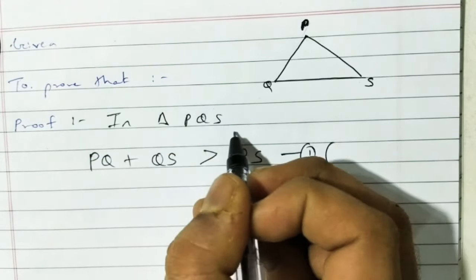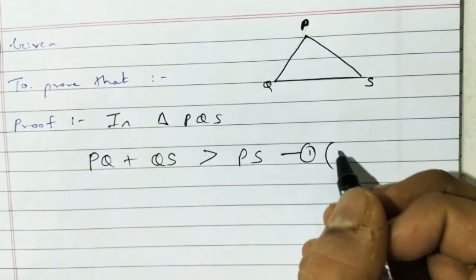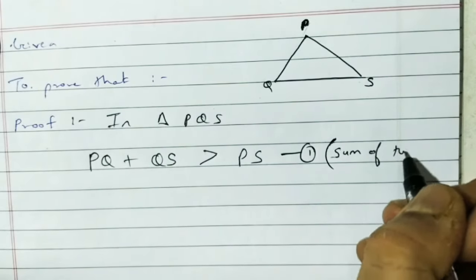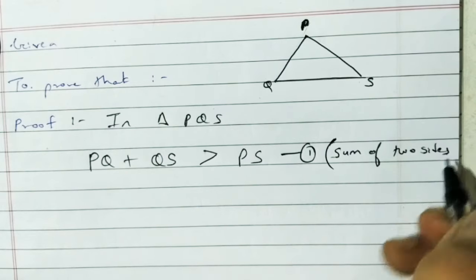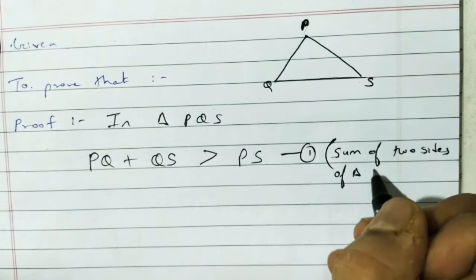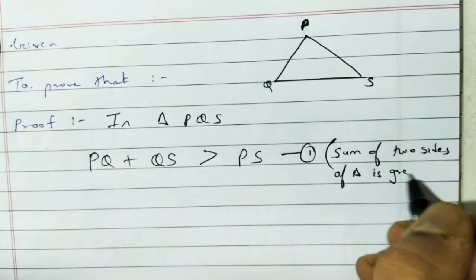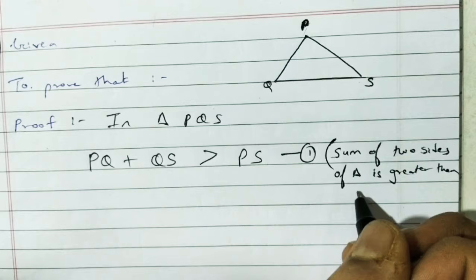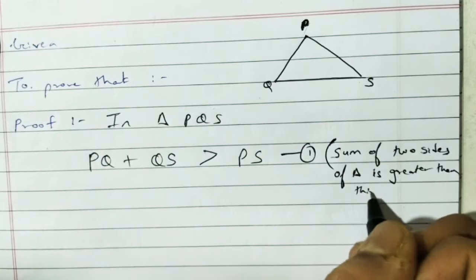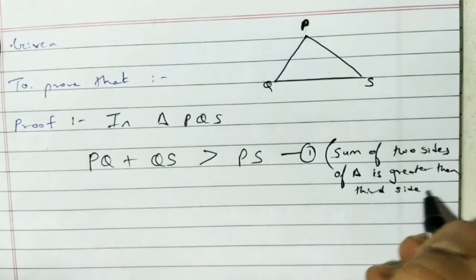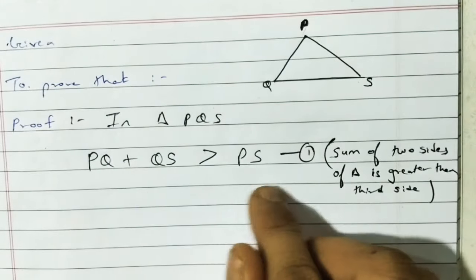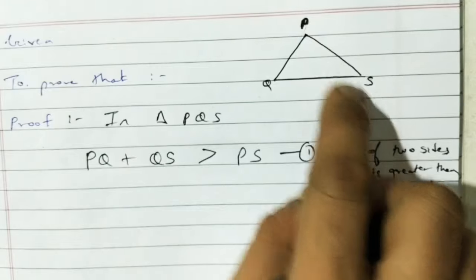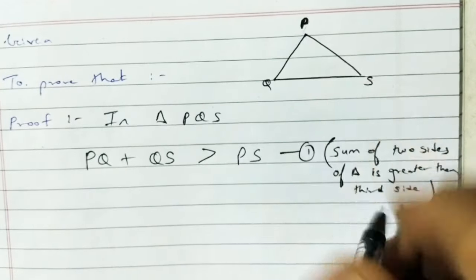Write the statement and reason — sum of two sides of a triangle is greater than the third side. You can write it above or in brackets as the reason. So PQ plus QS greater than PS is equation 1.